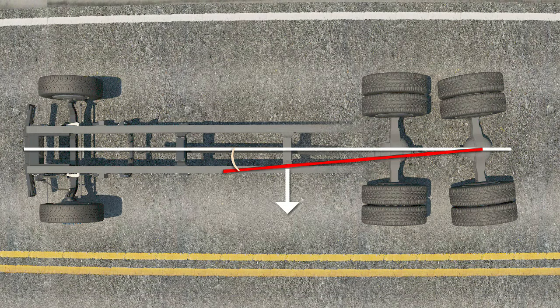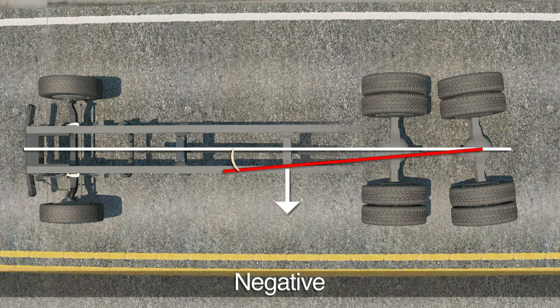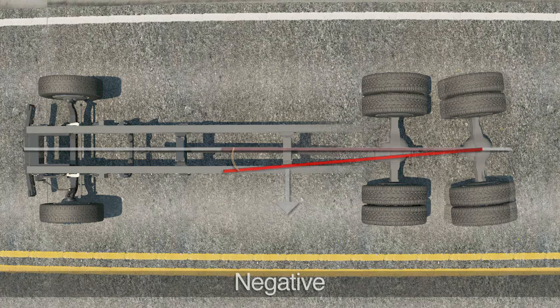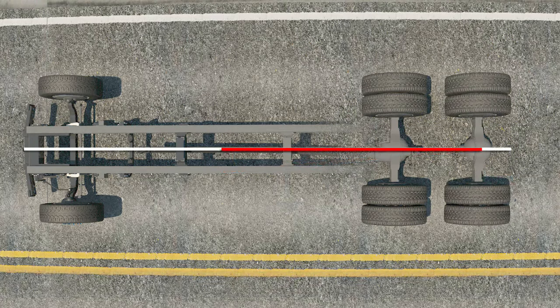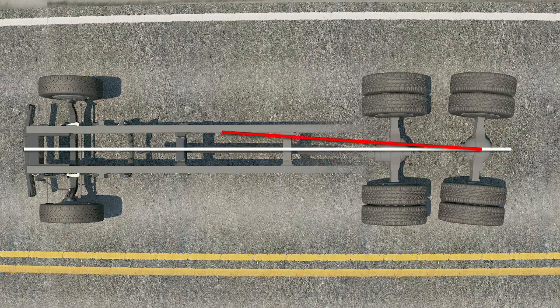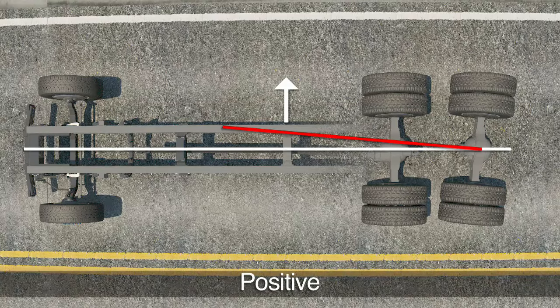If the axle is pointed to the left, the thrustline is considered negative. If the axle is pointed to the right, the thrustline is considered positive.